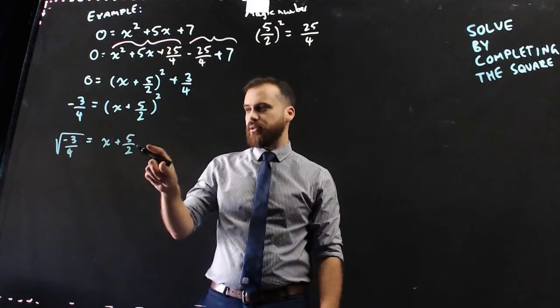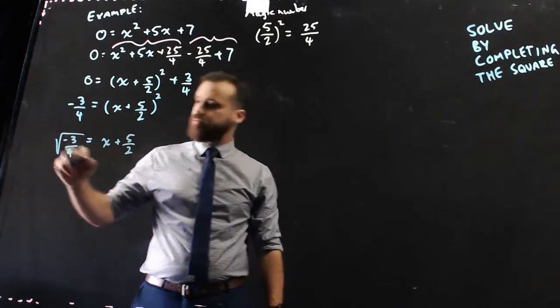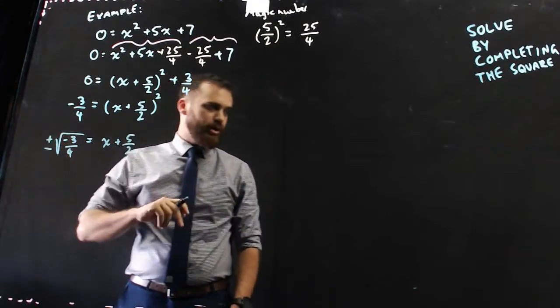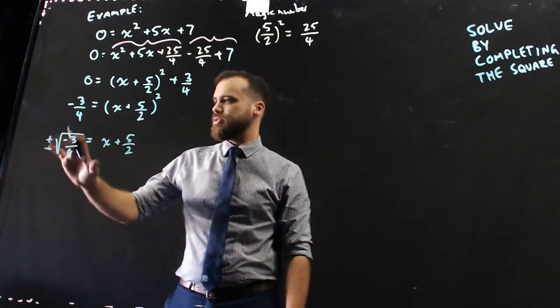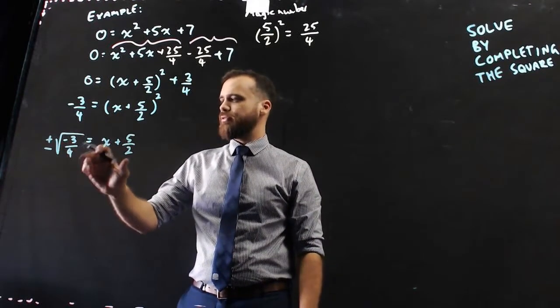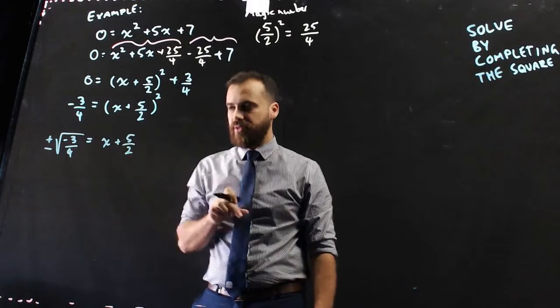And we're not going to have a square root there. Now, it's not just the square root, but it's the plus or minus square root. So, plus or minus the square root of negative 3 over 4 equals x plus 5 over 2.